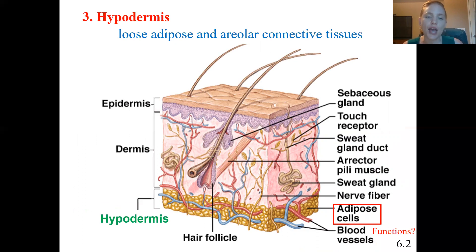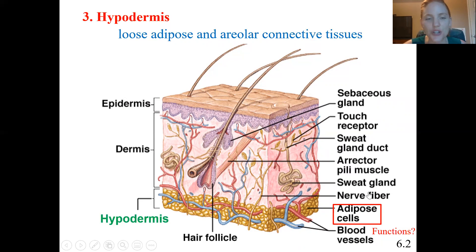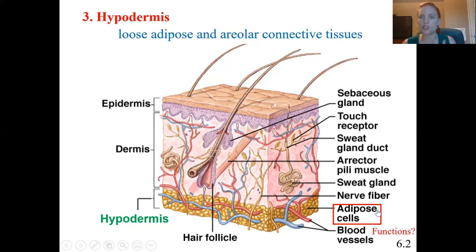Moving on to the hypodermis — remember, hypo means below. The hypodermis contains areolar connective tissue, but more distinctively, it contains a lot of loose adipose connective tissue. Adipose means fat, so there's a lot of fat underneath the dermis in the hypodermis. That adipose tissue allows the skin to store energy, provides cushioning to protect against trauma, and is important for thermal regulation — helping insulate and retain body heat.